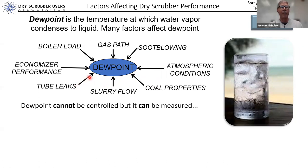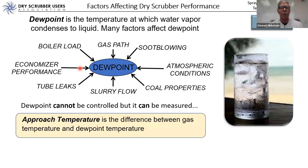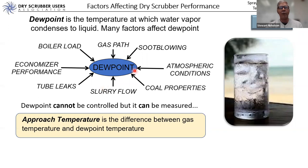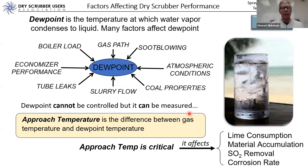Dew point cannot be controlled — too many factors affect it in combustion processes: boiler load, soot blowing, atmospheric conditions, fuel properties, the amount of slurry being sprayed, boiler tube leaks. We have absolutely no practical control over these things. But we can measure, and when we measure we can control something called the approach temperature — which is simply the difference between the dew point temperature and the dry bulb temperature generally at the exit of the SDA vessel.